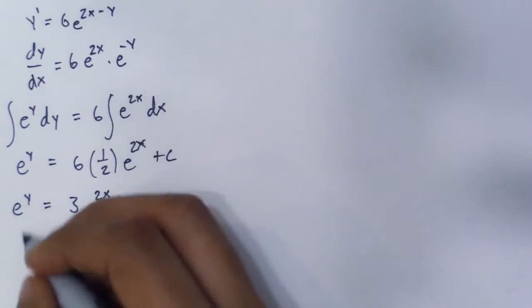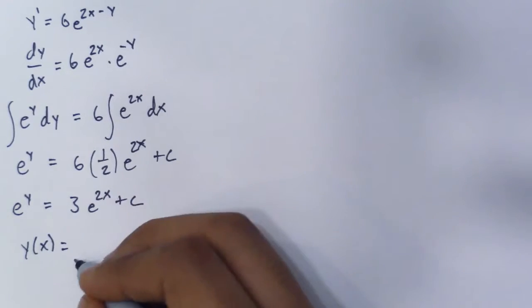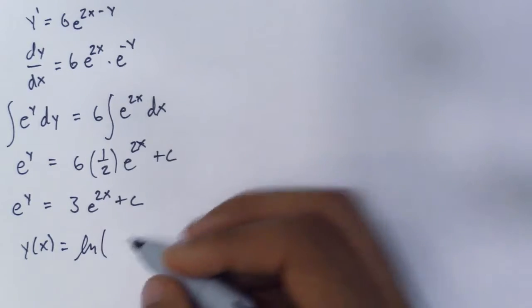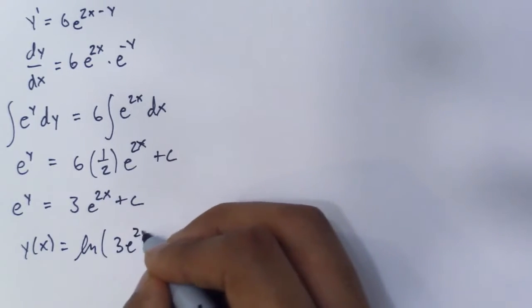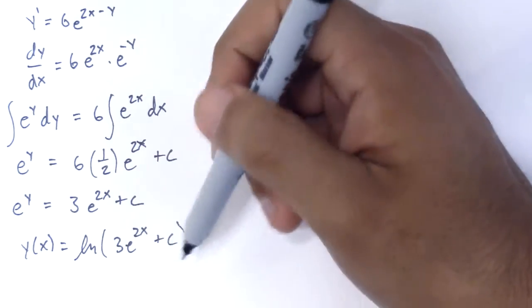that you have to do the ln to get y(x). So y(x) is simply the ln of (3e^(2x) + c). So you guys may be wondering why I use parentheses instead of...